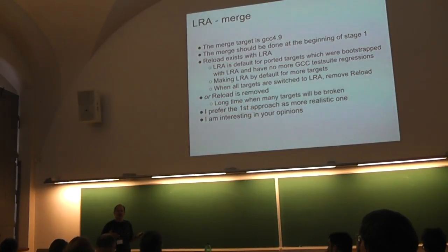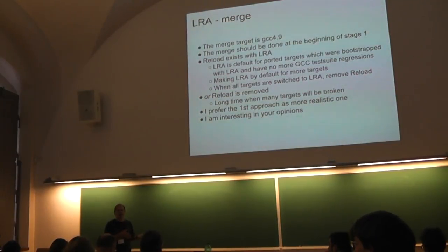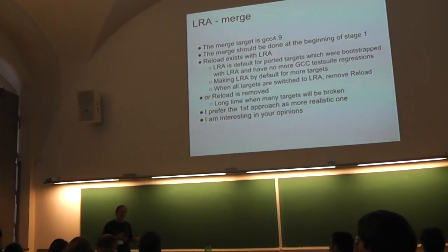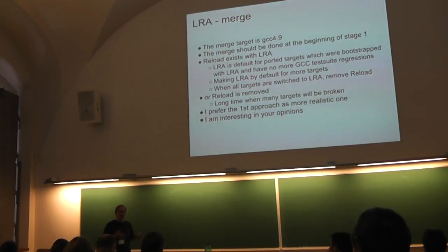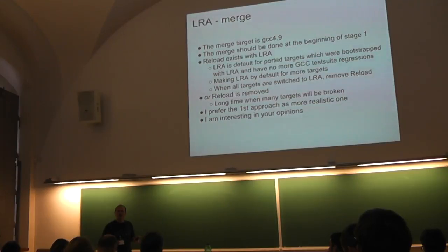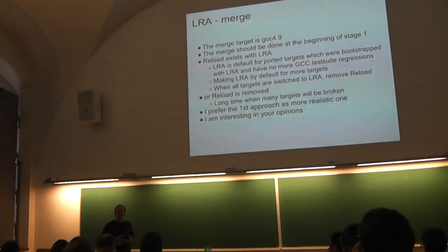Also, we have one transformation which doesn't correspond to an instruction. And so, modern code selection algorithms — we also have instructions which have several outputs, and that's also not implemented by modern code selection algorithms. So some research should be done to remove this gap.